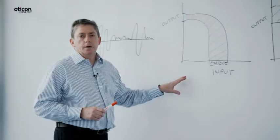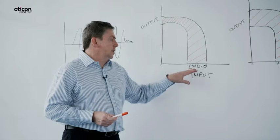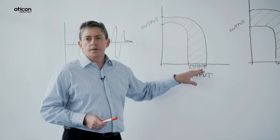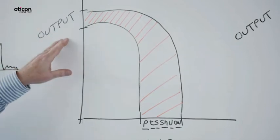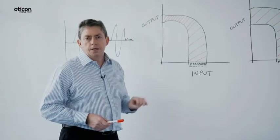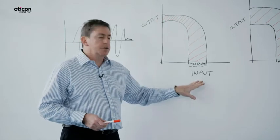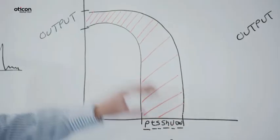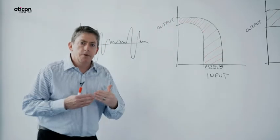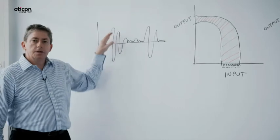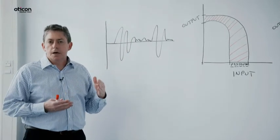If we take a look at the way a traditional fast-acting compression system is going to work, it's going to take this natural 30 dB range of inputs and project it into the listener's ear canal, but over a much smaller range of outputs. That's the nature of fast-acting compression. What ends up happening when you do that compression is that these natural level differences from phoneme to phoneme are lost within that compression process.